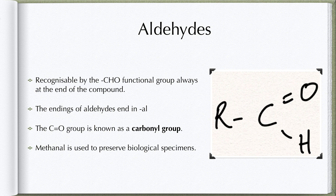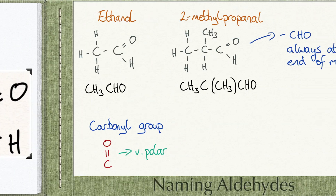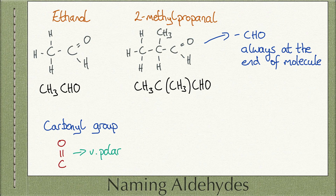The carbon double-bonded to oxygen is known as a carbonyl group. Methanal is used to preserve biological specimens. Note: the OH attached to the CHO group can indicate either a hydrogen or a carbon chain. Aldehydes are easy to name because the functional group CHO must be at the end of the compound. For example, ethanal. You can draw the CH group at an angle or at 90 degrees.